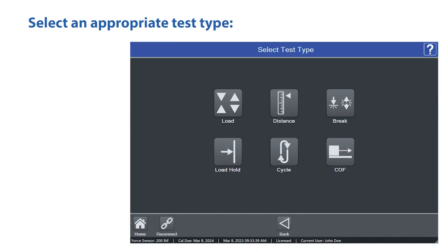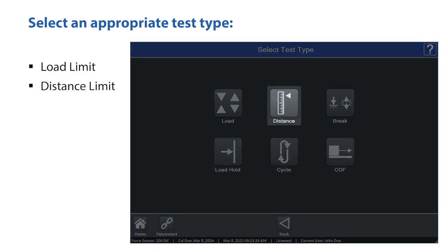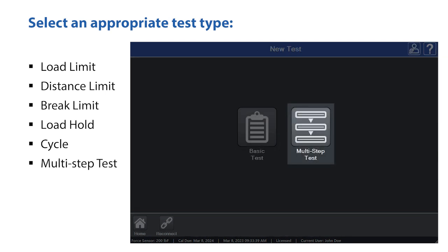Commonly used test types for wire crimp pull testing include load limit, distance limit, brake limit, load hold, cycle, and multi-step test.